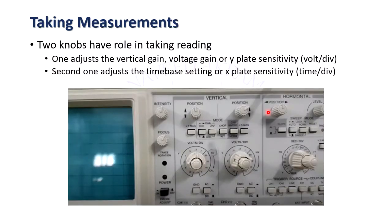For taking readings, there are two important knobs on the cathode ray oscilloscope. One adjusts the vertical gain — also called voltage gain or y-plate sensitivity. This is actually the volts per division along the y-axis. The second knob adjusts the time-based setting — also called x-sensitivity — and this is actually the time per division along the x-axis.